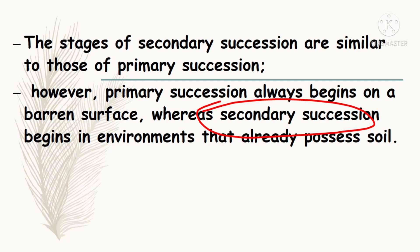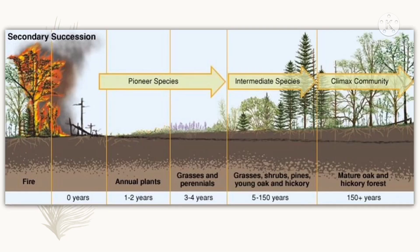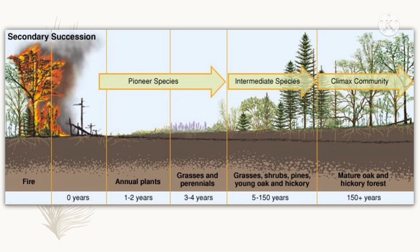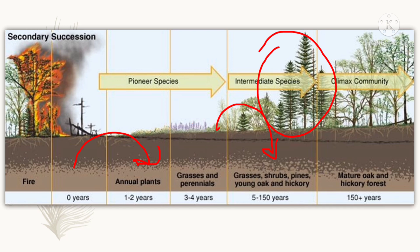You can understand through a diagram: in secondary succession, first there will be fires or floods because of which the whole forest is eroded and burning. Then there will be only soil remaining. A few years later, some plants will start to generate. Then herbs, shrubs, and pines will also start to form, and our secondary succession will start.